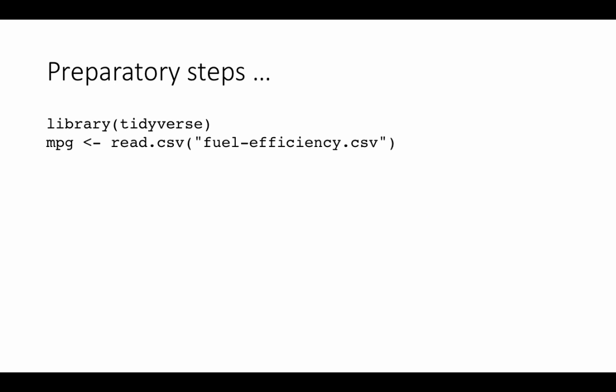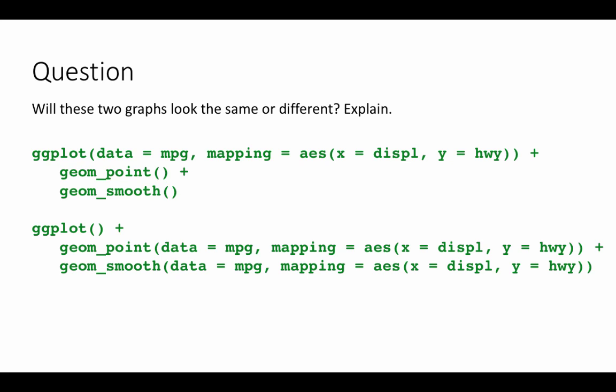Today you're going to learn a lot of new techniques with ggplot — all of these are very important, very useful, and exciting techniques. Like I said, pay careful attention to the code, pause the video liberally, and play around with it. So here we've got two graphs which have been plotted and the question is: will they look the same or will they look different? The first one says ggplot, data is mpg, mapping is aesthetics x equals displacement, y equals highway miles, and then geom_point and geom_smooth.